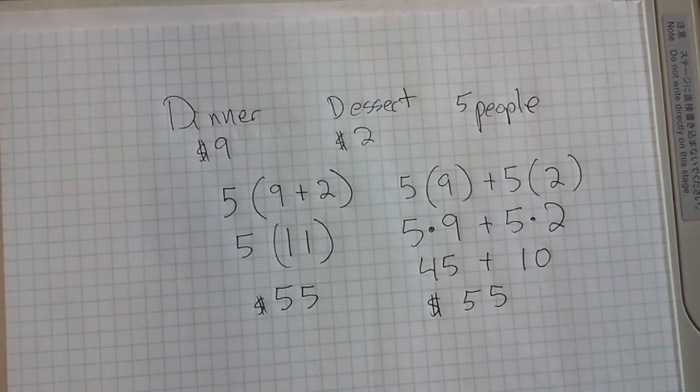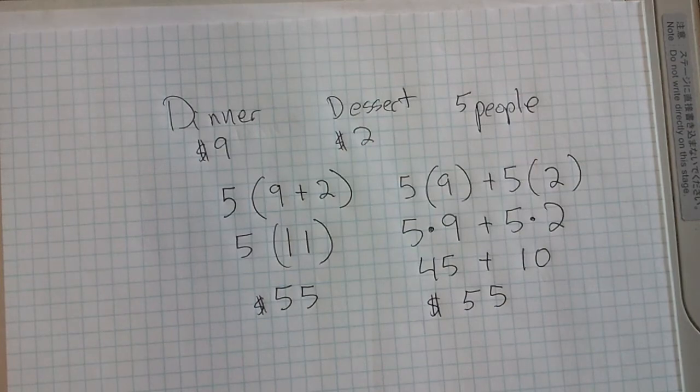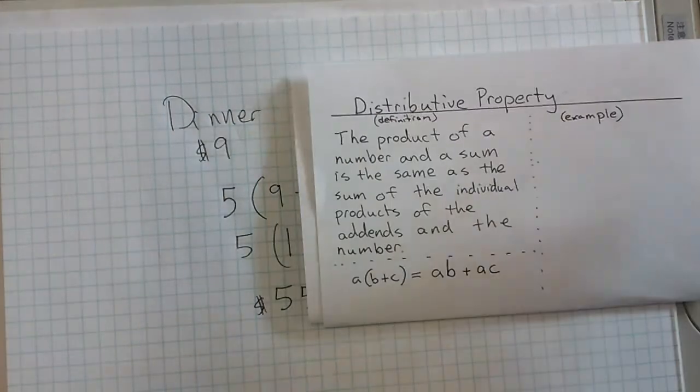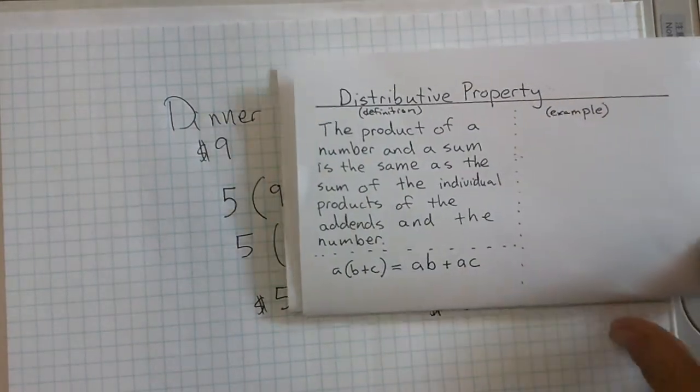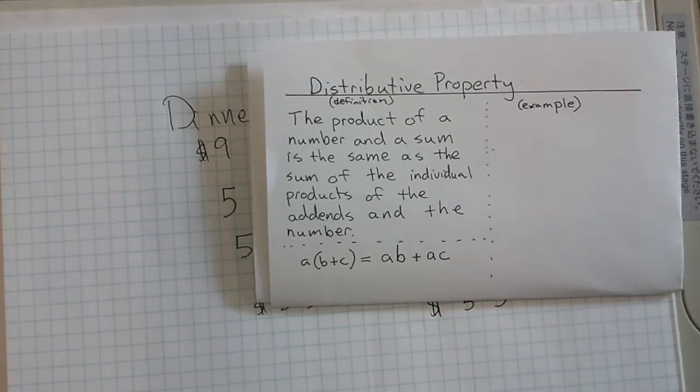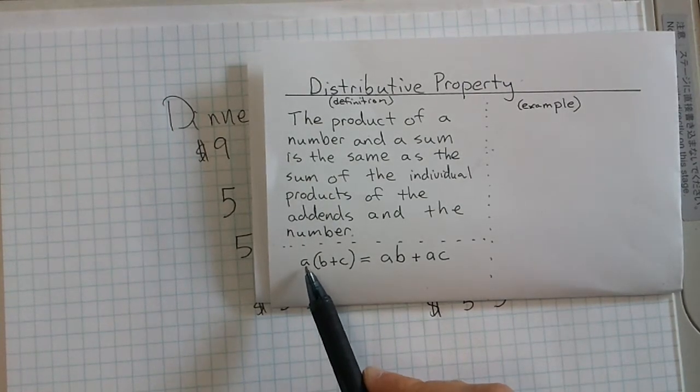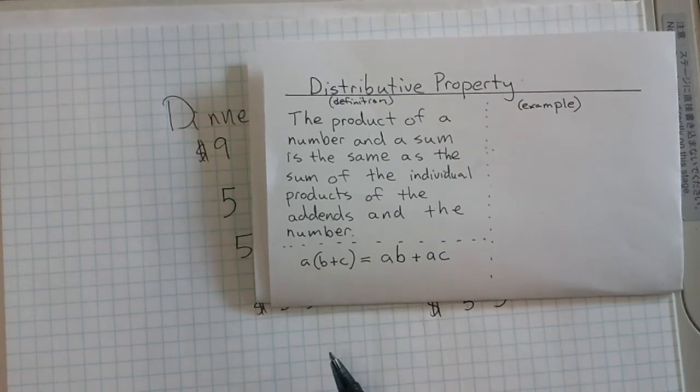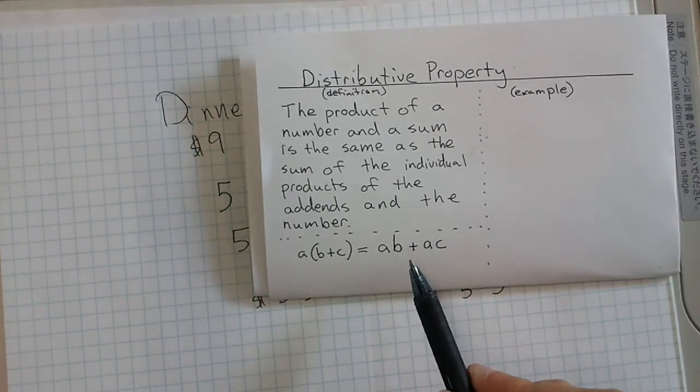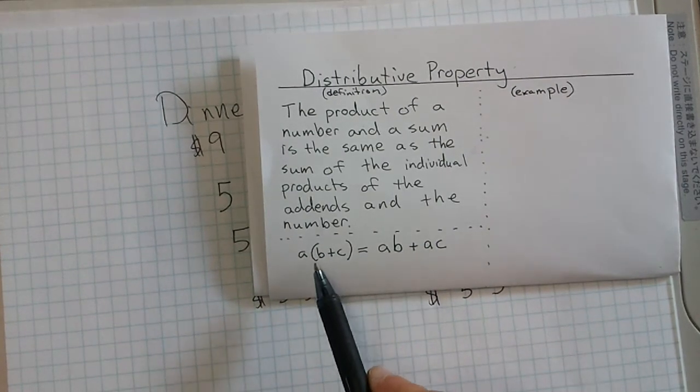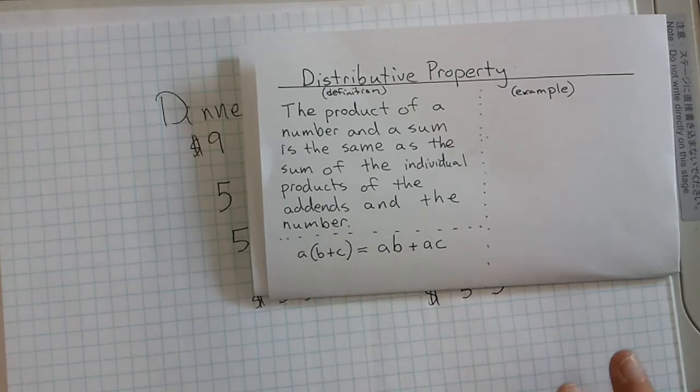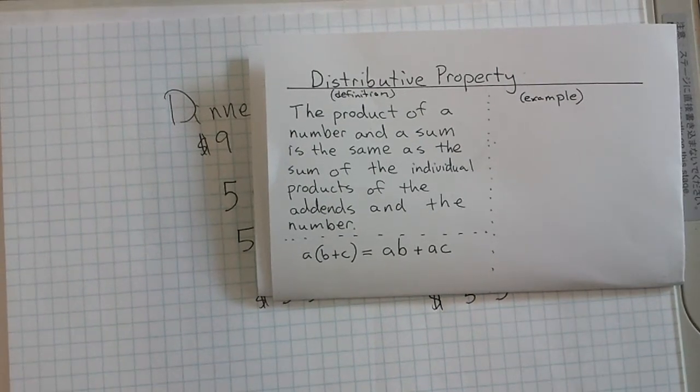When we looked at this, this was our definition from the book. The product of a number and a sum is the same as the sum of the individual products of the addends and the number. The product of the number and the sum is the same as the sum of the products of the addends times that number.